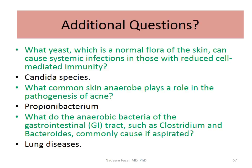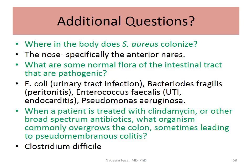What do anaerobic bacteria of the GI tract such as Clostridium or Bacteroides commonly cause if aspirated? If vomit is aspirated into the respiratory tract, it can cause lung disease. Where in the body does S. aureus colonize? The nose — especially the anterior part. What are some normal intestinal flora that are pathogenic? E. coli causing urinary tract infection, Bacteroides fragilis causing peritonitis, Enterococcus faecalis causing UTI and endocarditis, and Pseudomonas aeruginosa.